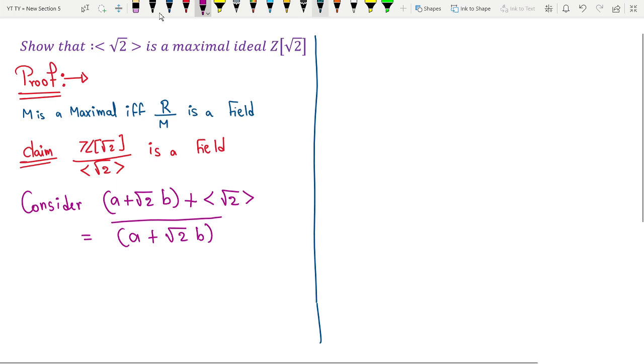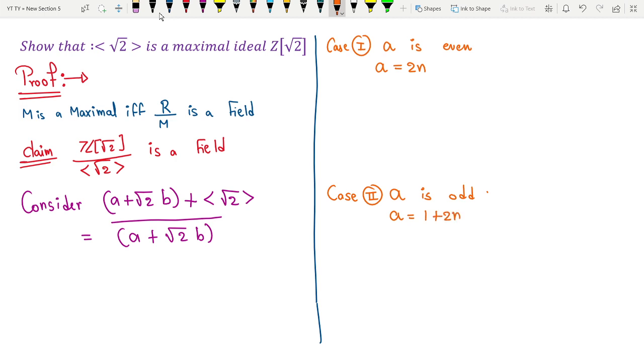Now two things can happen. I am going to consider two different cases. Case 1 is when a is an even number, or case 2 when it is an odd number. If it is even, I can write a equals 2 times n. If it is odd, I can write a equals 1 plus 2n.